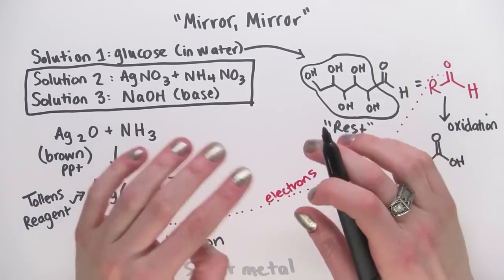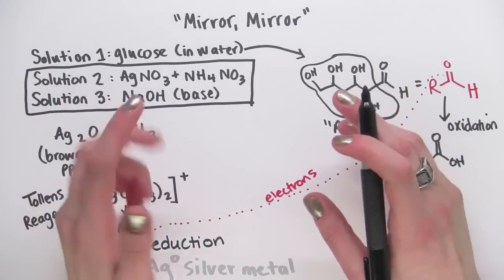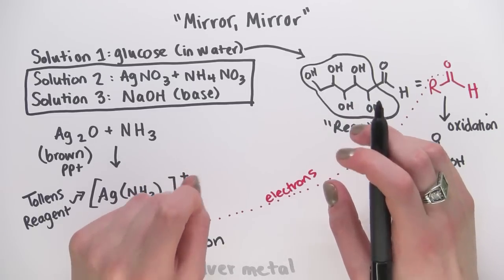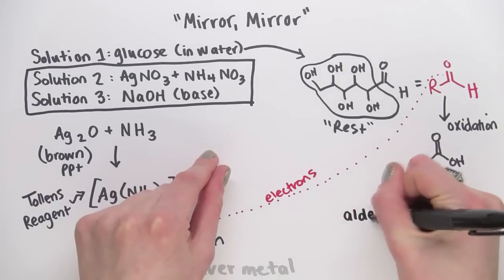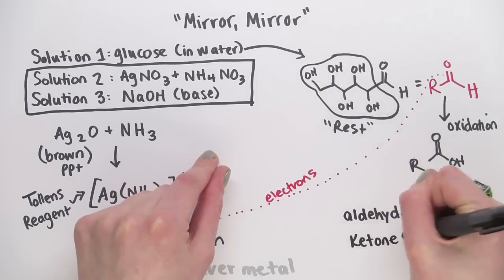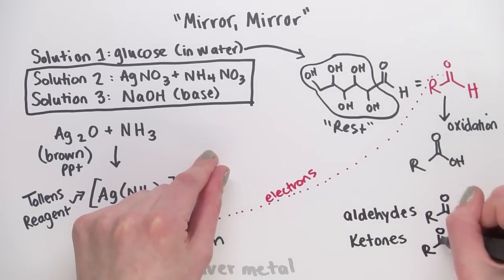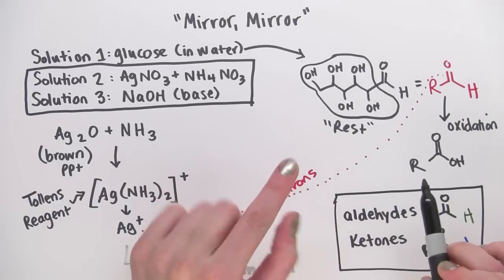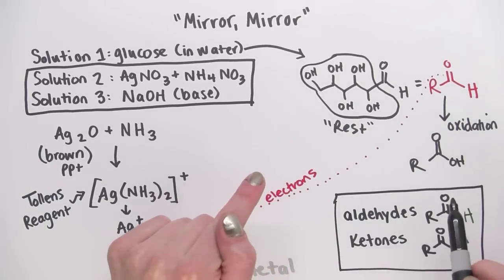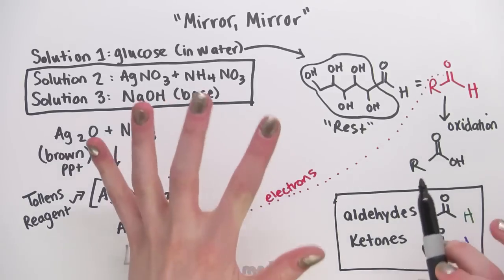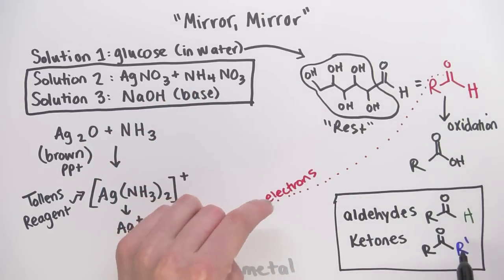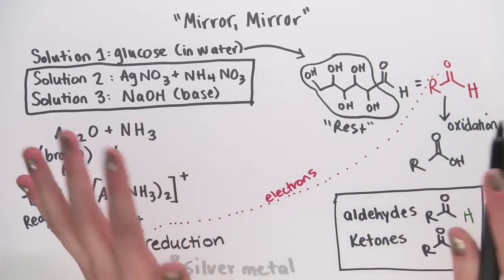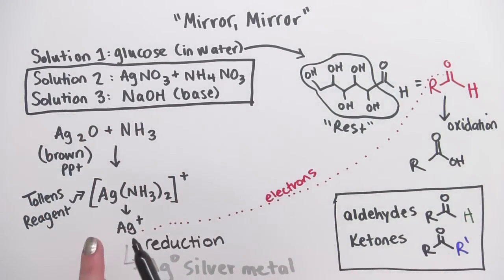The point of Tollens test was not to produce silver mirrors, although a similar reaction is used for that today. The point was to distinguish between two types of sugars, ones containing aldehydes and ones containing ketones. Let me draw those. The difference is that in an aldehyde, the carbon is connected to a hydrogen. And in a ketone, the carbon is connected to another carbon. Aldehydes are more reactive than ketones, so they will react with the silver ions, while the ketones will not.